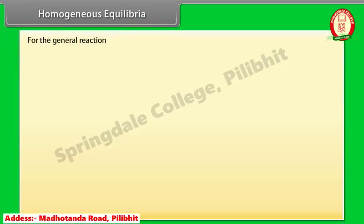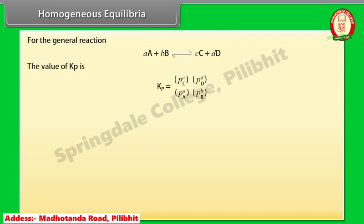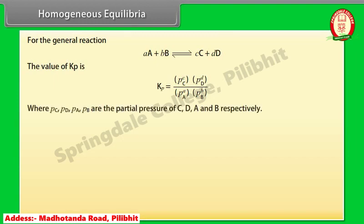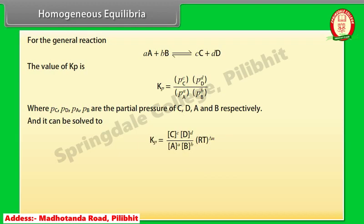For the general reaction, the value of Kp is expressed in terms of partial pressures Pc, Pd, Pa, and Pb of C, D, A, and B respectively. The relation between Kp and Kc is: Kp = Kc × (RT)^ΔN, where ΔN equals the number of moles of gaseous products minus the number of moles of gaseous reactants in the balanced chemical equation. Pressure is expressed in bar.